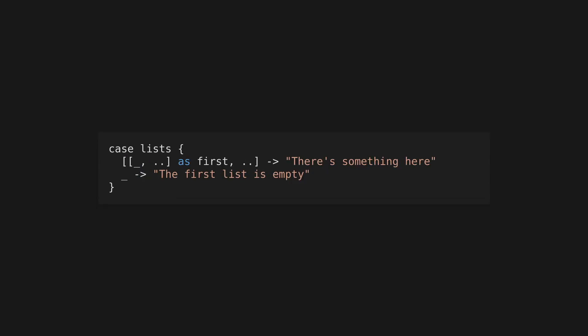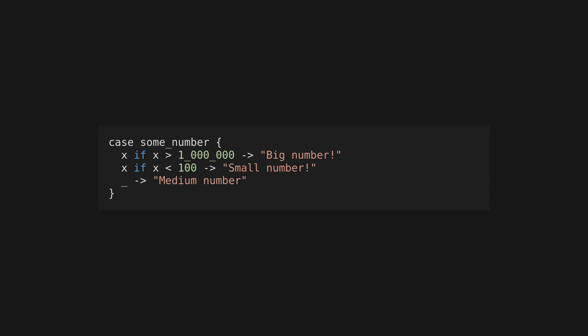You can use pattern aliases to assign sub-patterns to variables. For example, this will match the first list in a list of lists if it's not empty. Finally, you can apply a limited set of boolean conditions to your patterns to match conditionally.